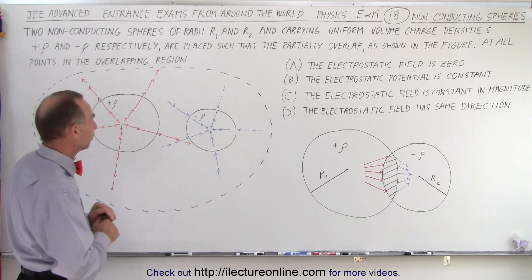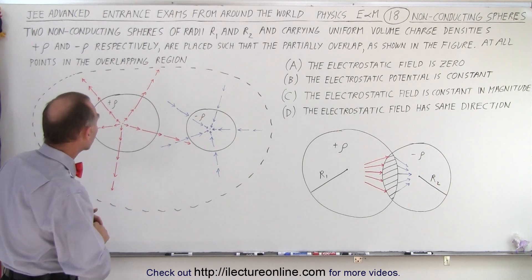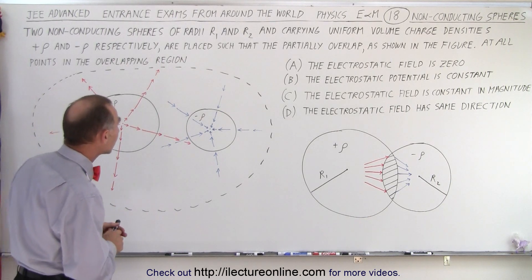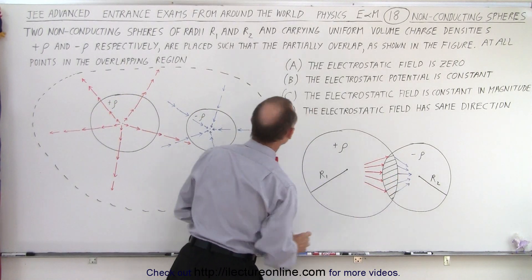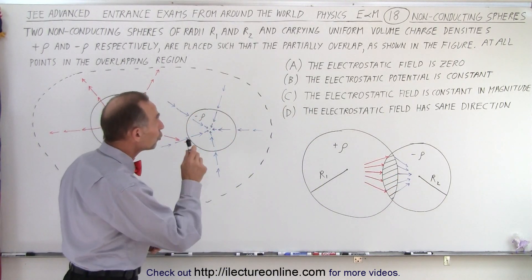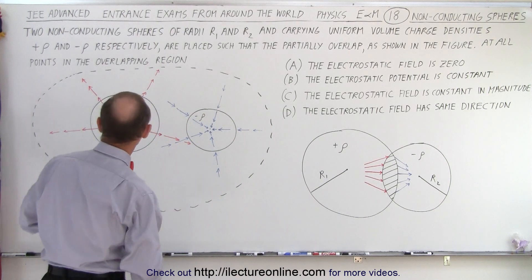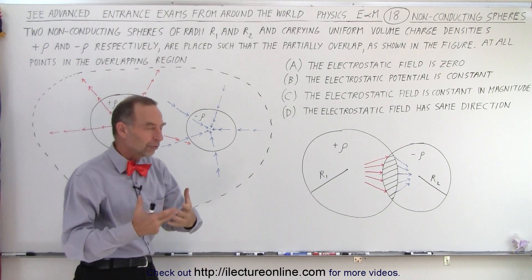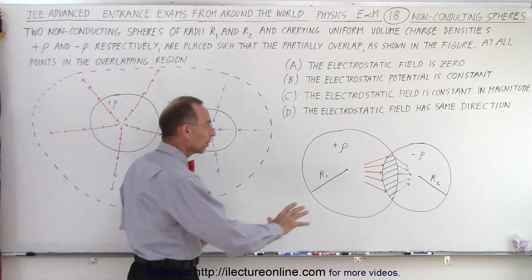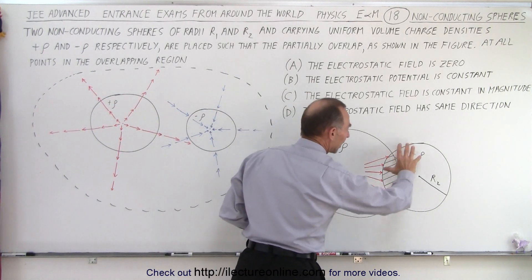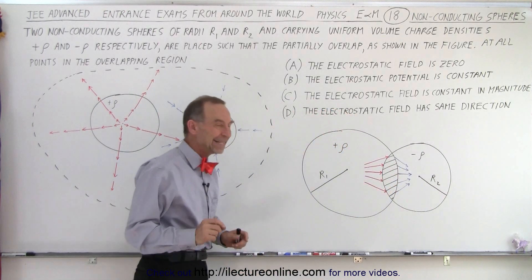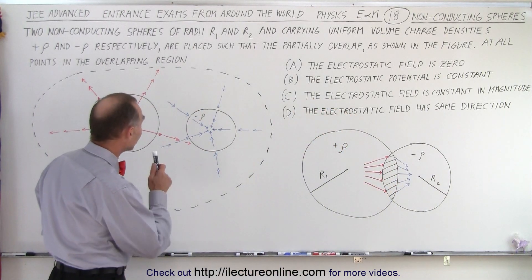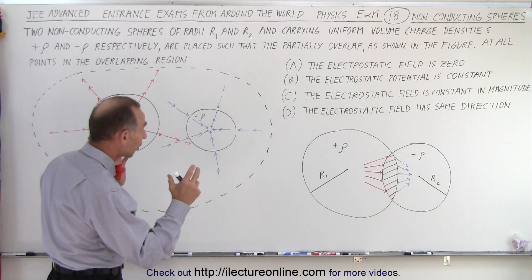So let's read the question. Two non-conducting spheres of radii R1 and R2, so they're not the same size, and carrying uniform volume charge densities of plus rho and minus rho. So the magnitude of the charge density is the same, but the left sphere is filled with positive charge, and the right sphere is filled with negative charge.